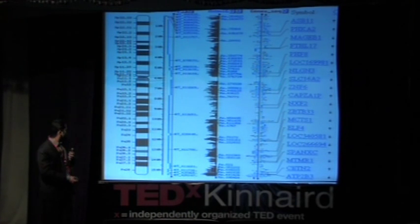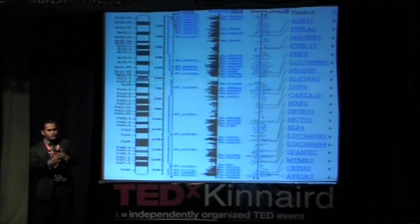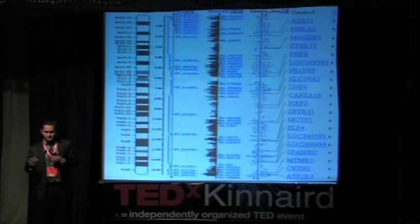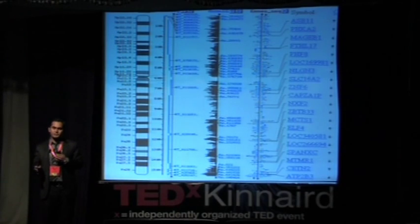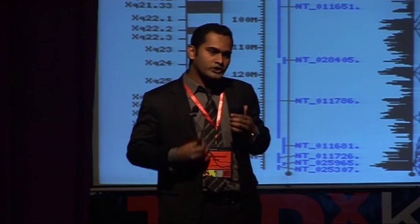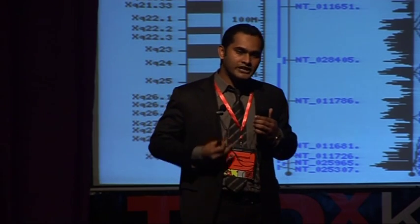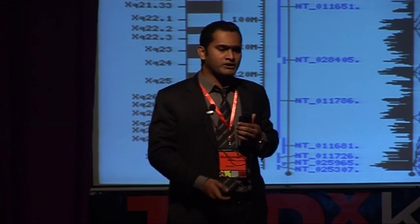In front of you is the genome sequence of James Watson, who happens to be one of the scientists who gave us the structure of DNA. Now, this database is as incomprehensible as it looks, but we need to relate it to people.